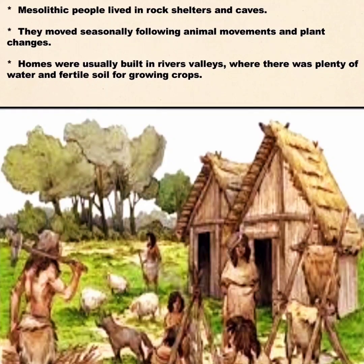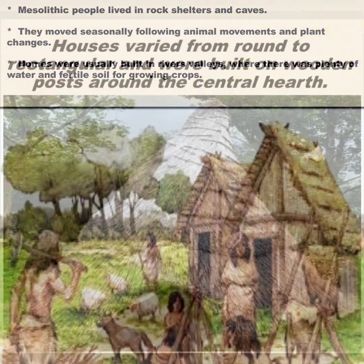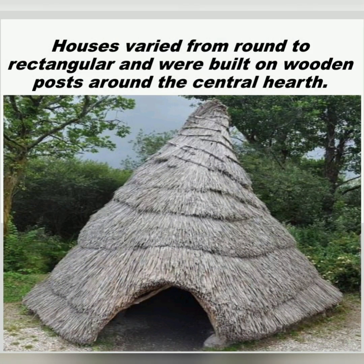Mesolithic people lived in rock shelters and caves. They moved seasonally, following animal movements and plant changes. Homes were usually built in river valleys where there was plenty of water and fertile soil for growing crops. Houses varied from round to rectangular and were built on wooden posts around a central hearth.